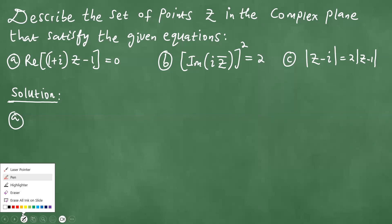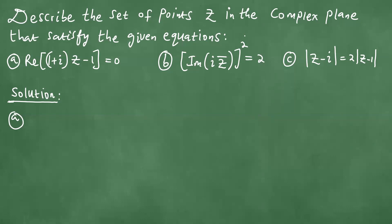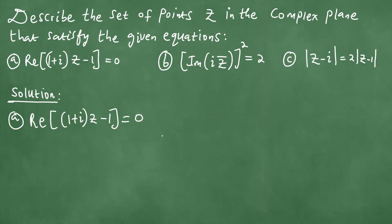We are here and we want to describe the set of points z in the complex plane that satisfy the given equations. We have part (a) first, which says the real part of the complex number (1+i)z minus 1 is identically 0. To solve this, we let z be equal to x plus iy.